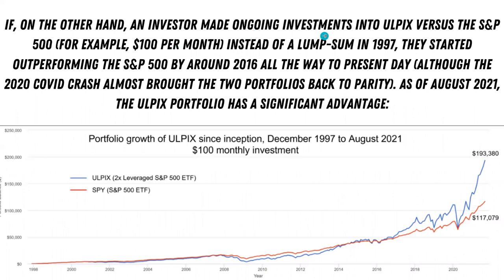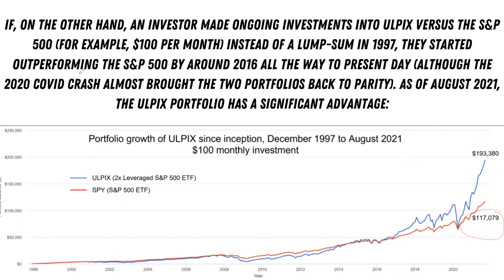If an investor made ongoing investments into YulPix versus the S&P 500, for example $100 per month instead of a lump sum in 1997, they would have started outperforming the S&P 500 around 2016, all the way to the present day. Although the 2020 COVID crash almost brought the two portfolios back to parity, as of August 2021 the YulPix portfolio has a significant advantage. This is a 2x leveraged portfolio. Investing $100 per month into YulPix during this time period from 1997 to August 2021 — dollar cost averaging — gave you $193,000 versus $117,000 from investing $100 per month into an index fund.